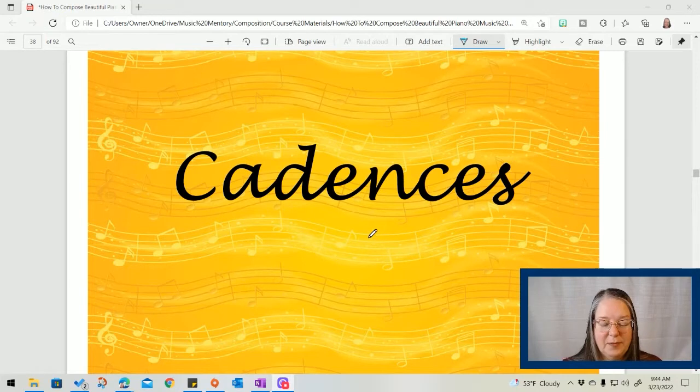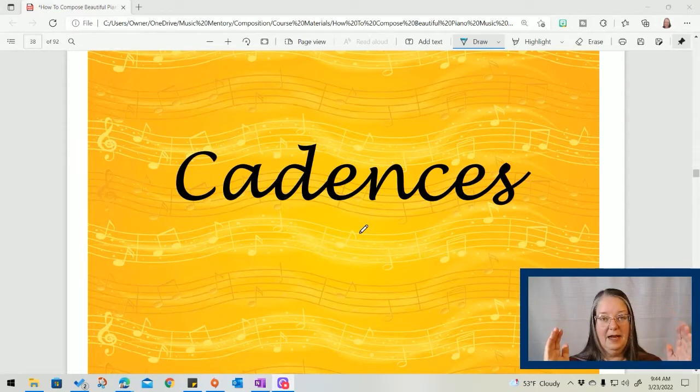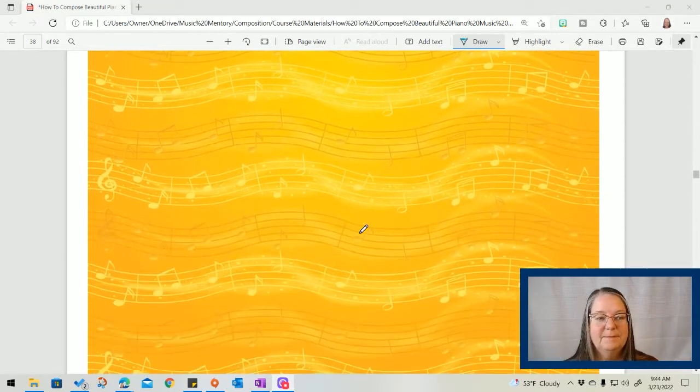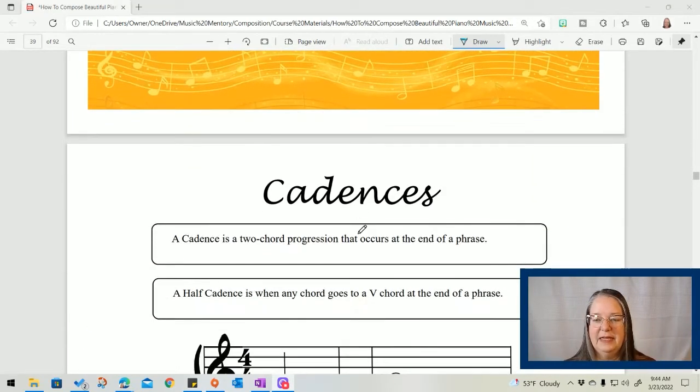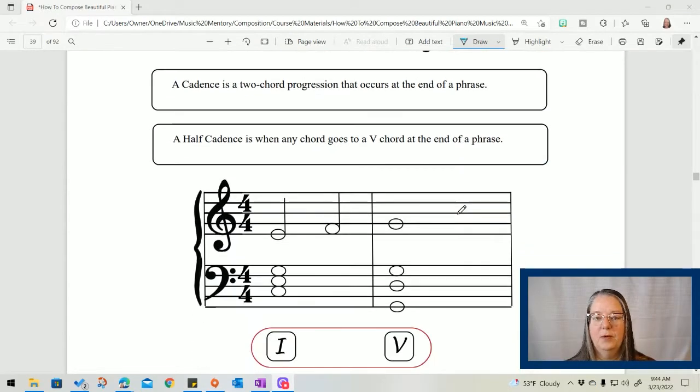Alright, cadences. This is a page from the workbook. A cadence is two chords that happen at the end of a phrase. We have worked on chord progressions and how to write chord progressions in the past couple of videos. So following those same rules that we learned, when you have two right there at the end, that's what a cadence is. Okay, there's different types of cadences right there. It says what it is. We're going to jump right into it. The first type we're going to learn is called a half cadence.